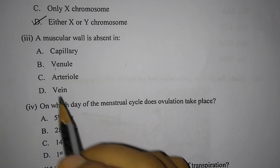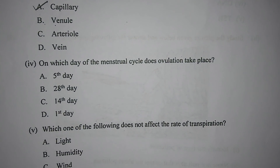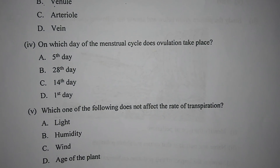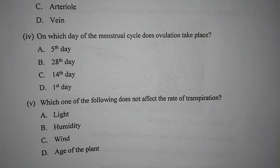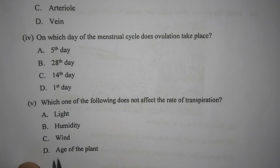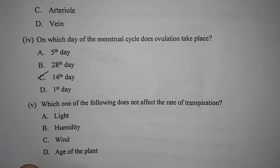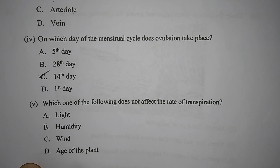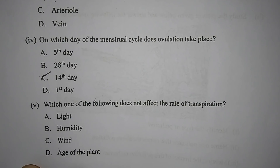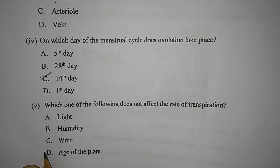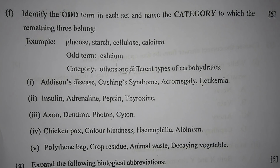Number 3 — a muscular wall is absent in: A) capillary, B) venule, C) artery, or D) vein. The answer is A, capillary. Number 4 — on which day of the menstrual cycle does ovulation take place? A) 5th day, B) 20th day, C) 14th day, or D) 1st day. The answer is C, 14th day. Number 5 — which one does not affect the rate of transpiration? A) light, B) humidity, C) wind, or D) age of the plant. The answer is D, age of the plant.